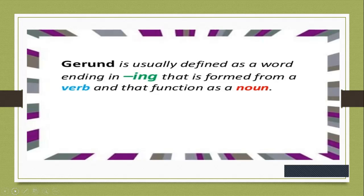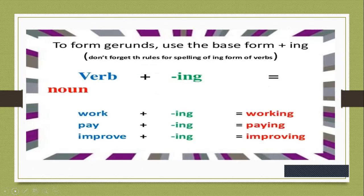Like all things in grammar, gerunds do take a tiny bit of detective work to spot. The problem here is that present participles also end with the letters -ing, and gerunds also end with -ing. We will proceed further. To form gerunds, use the base form plus -ing — don't forget the rules for spelling of the -ing form of verbs.